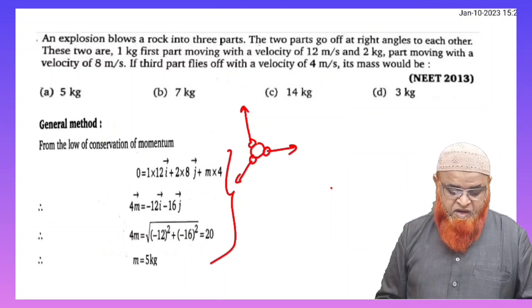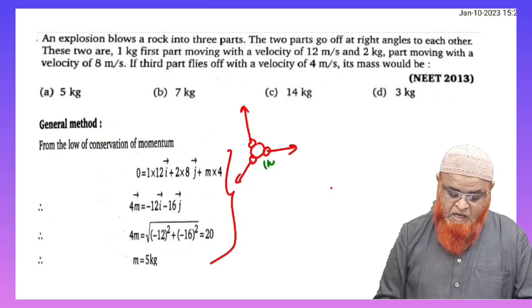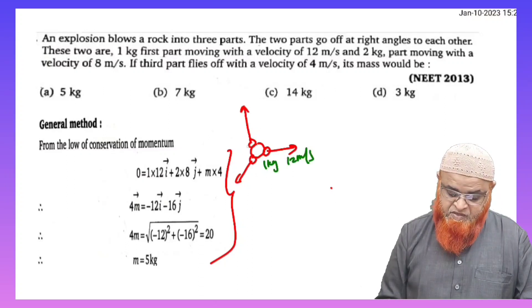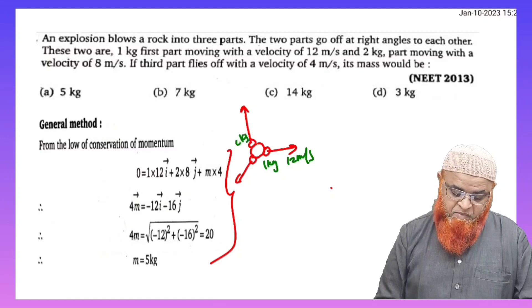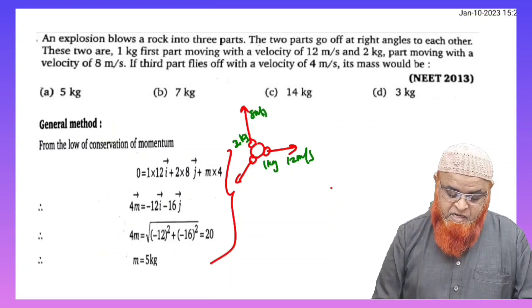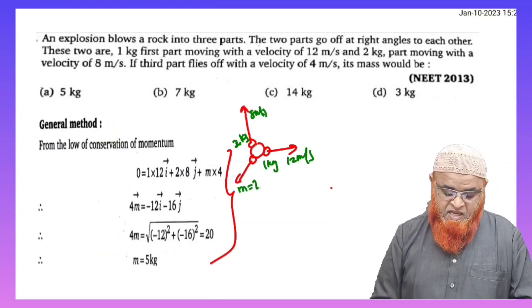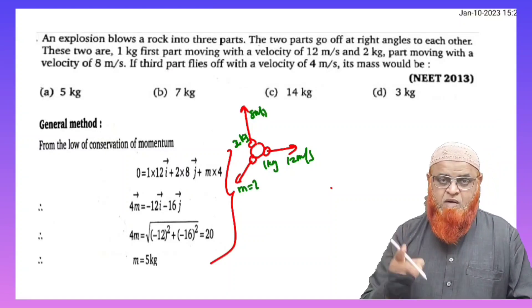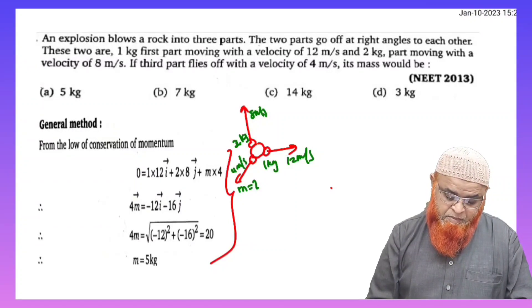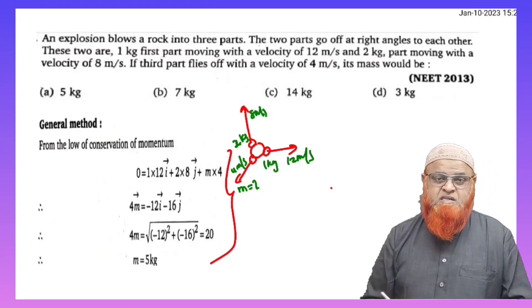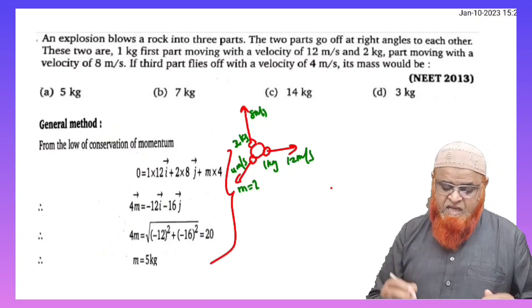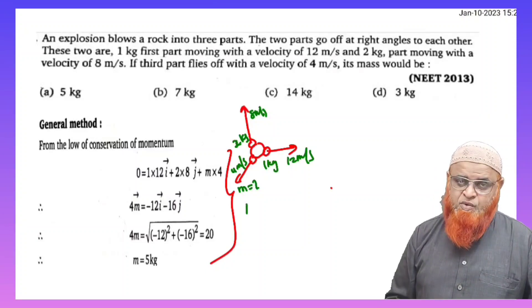Here for example, let us take there is a first block of mass 1 kg moving with a speed of 12 meters per second and the second block of mass 2 kg moving with a speed of 8 meters per second. He's asking us to find out the mass of the third block. He has given the velocity of the third block. How much is the velocity of the third block? It is going to be 4 meters per second. So instead of taking conservation of momentum formula, a simple strategy formula I'll tell you here: